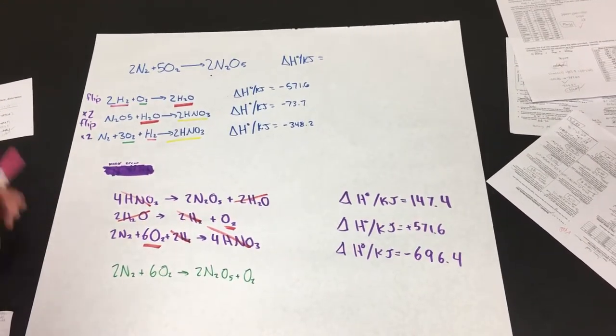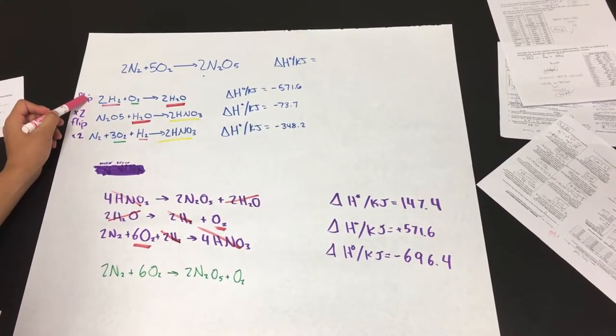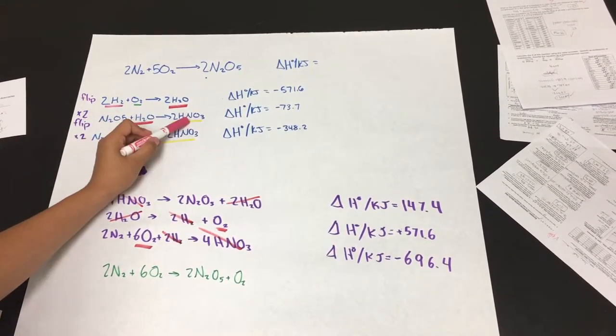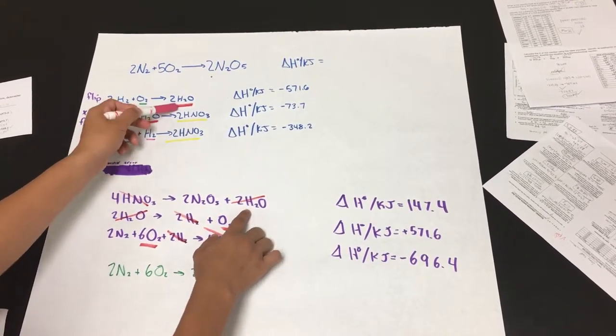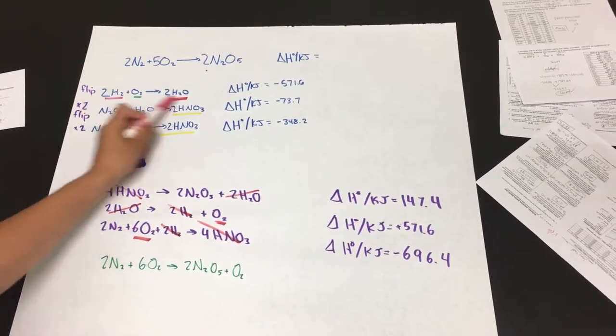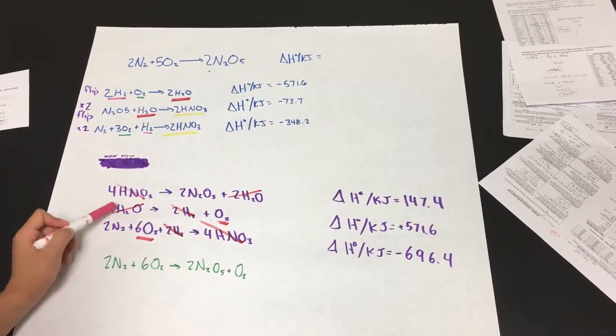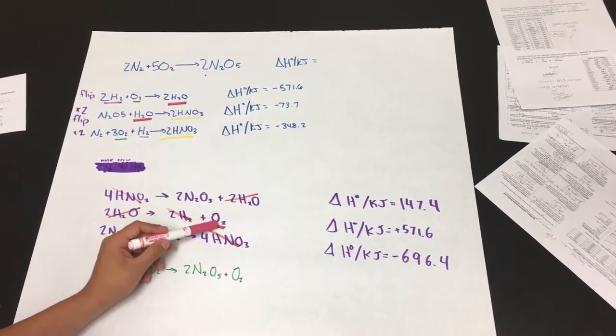And then next, we used this equation, and we saw that the H2O, when it's flipped, is now on the product side. So we need this one to be on the reactant side so we can cancel it out later. So it's just a flip, and it's right here. It's 2H2O yields 2H2 plus O2.